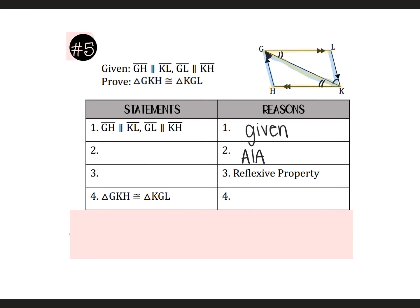I'm going to name them both in the same box. Starting with my single-marked angles: this angle has G as the vertex, so it's KGH, and that is congruent to LKG where K is the vertex. In the same box, I'll also put my other set of alternate interior angles — the double-marked ones: angle LGK is congruent to HKG. Next is the reflexive property — that is the side they both share, which is GK. So GK is congruent to GK. And lastly, the triangles are congruent by angle, side, angle.